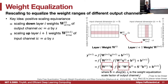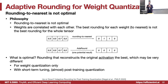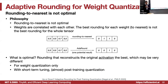Weight equalization doesn't require finding any training data or images. The intuition is simple: 1×100 equals 10×10. The coding is very simple — just a couple lines of code. You can also reference Qualcomm's AIMET open-source tool for the implementation.